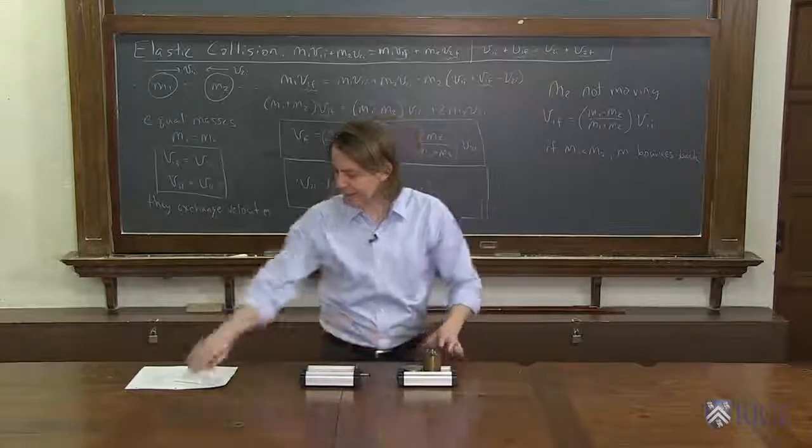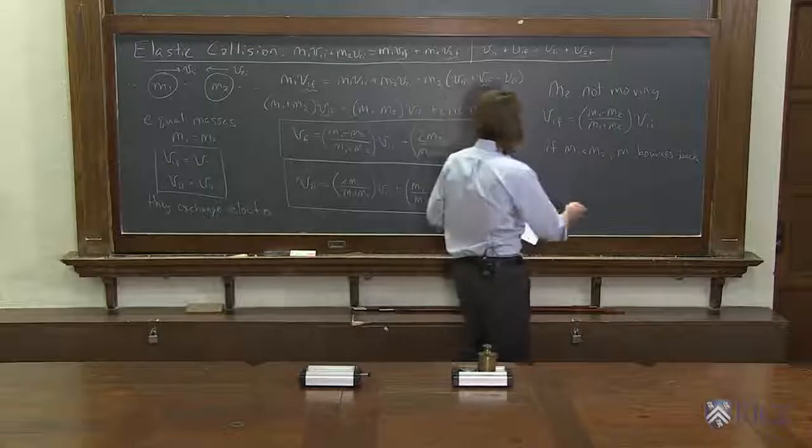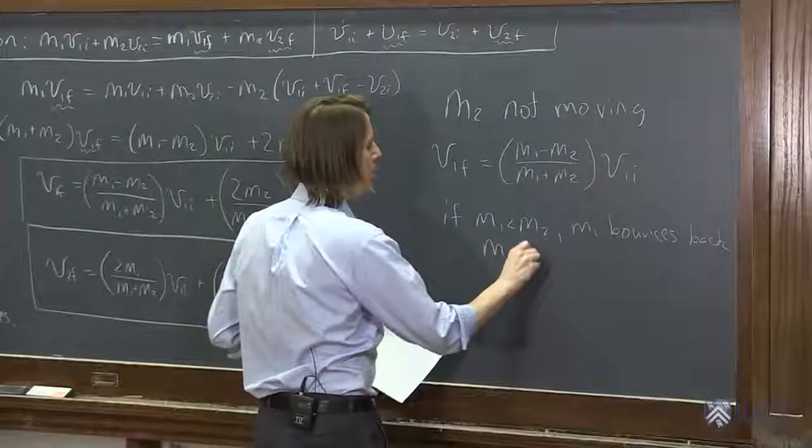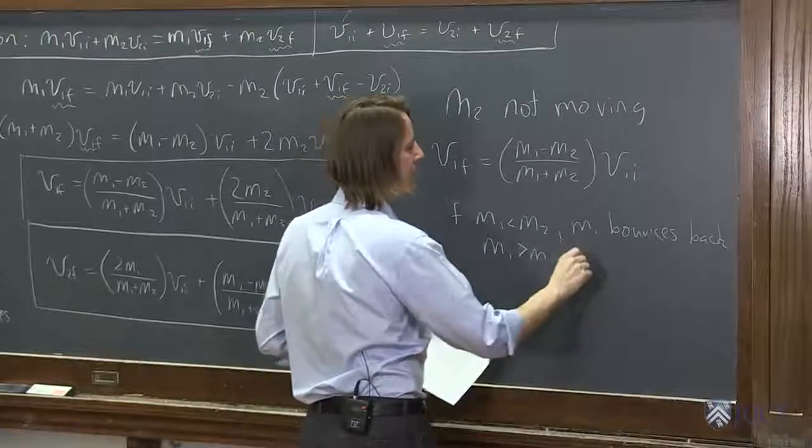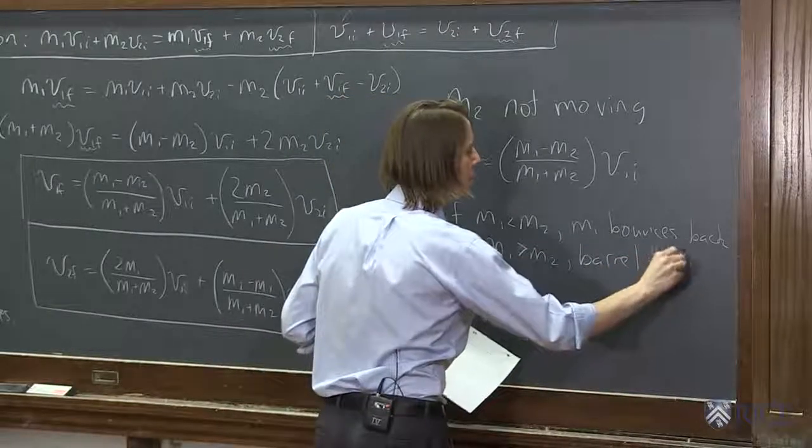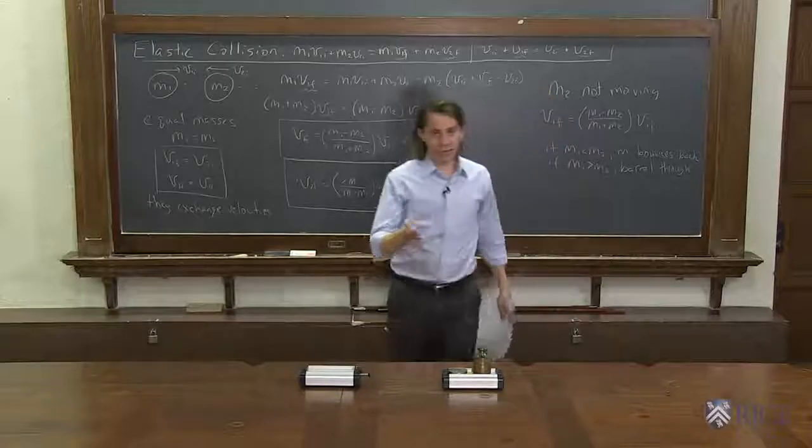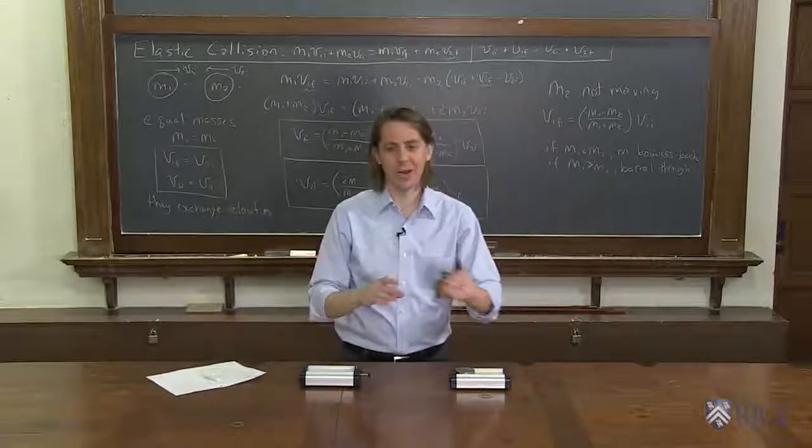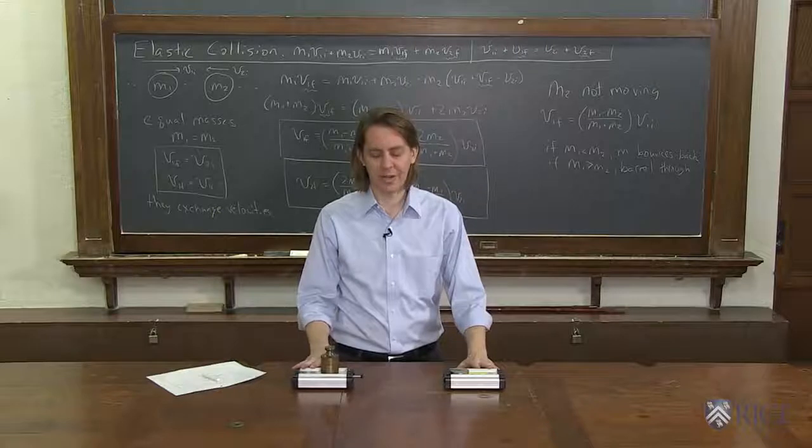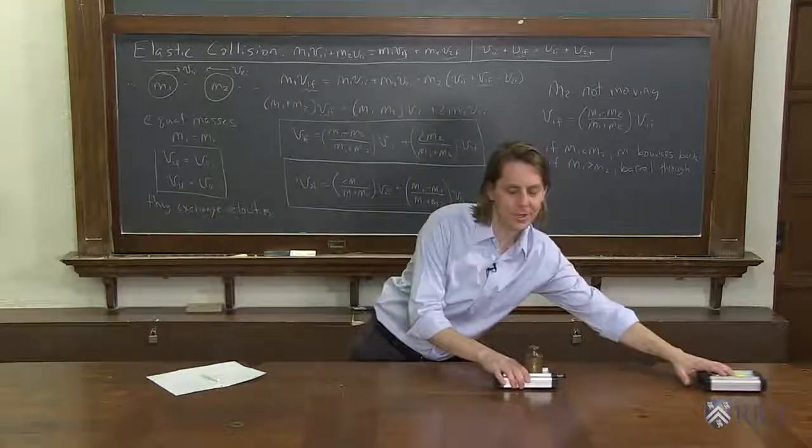If we look at the case where, let's see, if m1 is greater than m2, then it's going to barrel through is the phrase I'll use. So we can show you that as well. We can put the larger mass on m1. In this case, m1 should push m2 along and just keep on going. Let's see, there you go, kept going.